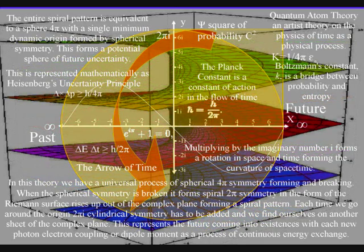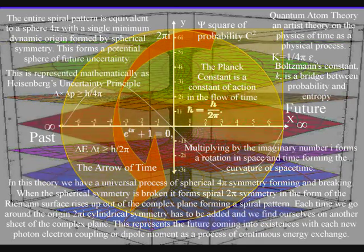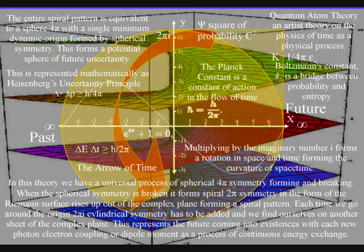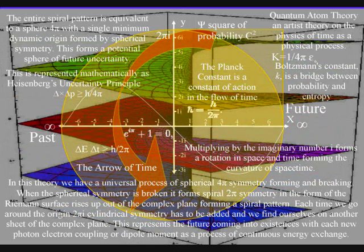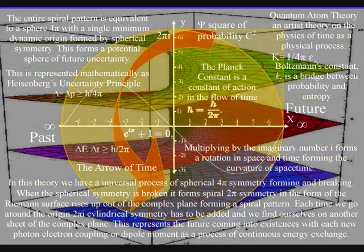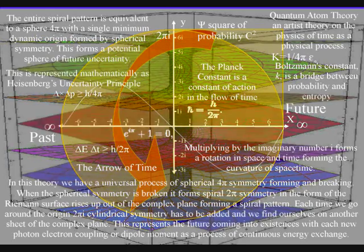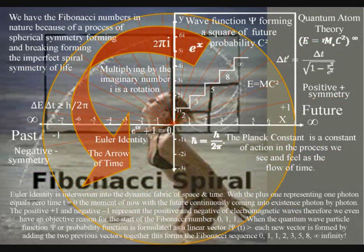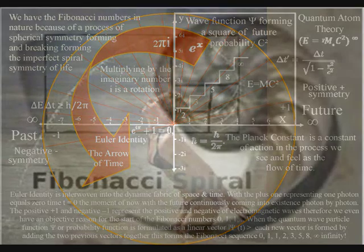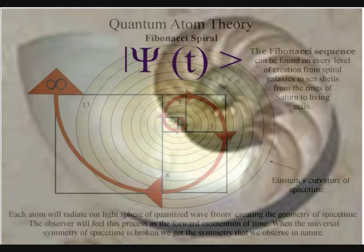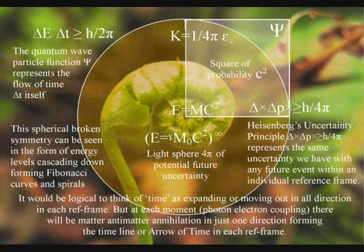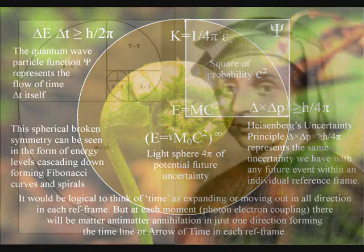This spiral symmetry forms line symmetry, representing the timeline, or arrow of time. The entire spiral pattern is equivalent to a sphere, four pi, with a single minimum dynamic origin, formed by spherical symmetry. When the spherical symmetry is broken, it forms the imperfect spiral symmetry of life that is visible in nature. This is because if the quantum wave particle function, or probability function, is reformulated as a linear vector, then each new vector is formed by adding the two previous vectors together. This forms the Fibonacci sequence.